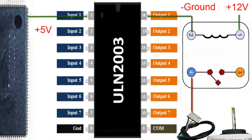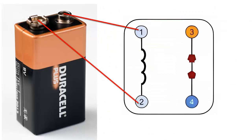In case the above tests do not yield a conclusion, the most recommended way is to energize the relay. To do this, it is advisable to remove it from the control board. If you remove the relay from the board, then energize the coil with a 9-volt square battery. If the relay operates with less voltage, energize it quickly to avoid damage.